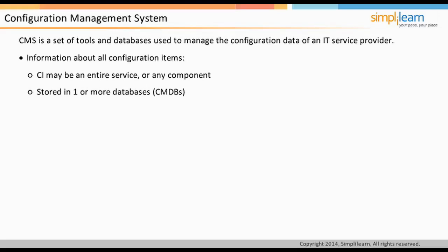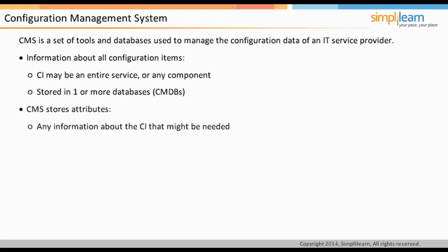The CMS may contain data about employees, suppliers, locations, business units, customers, and users. The CMS stores attributes, or any information about the CI that might be needed. It also stores relationships between CIs.